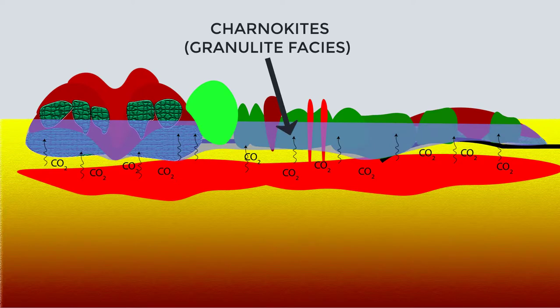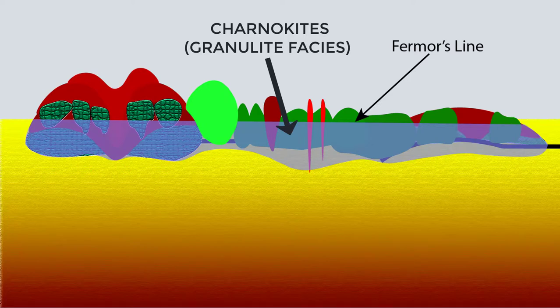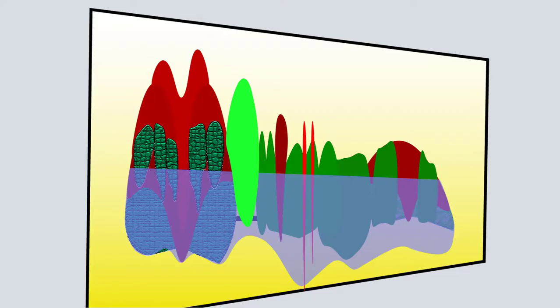This extent of metasomatism is marked by Fermor's Line and is also called Transition Zone. Metamorphism was also caused by younger granite emplacement due to widespread cratonization about the end of Archean.